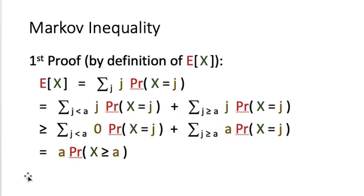We are going to show the Markov inequality in three different ways. The first proof is by the definition of the expected value of X. Expected of X equals the summation over all possible values j, each weighted by the probability that X equals j. We can separate this summation into two parts: one over values of j less than a, and another over values of j greater than or equal to a.